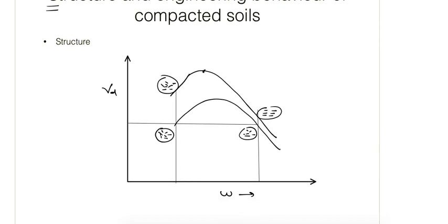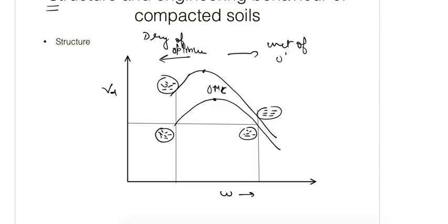At the optimum moisture content, the part on the left is called dry of optimum and the right side is known as wet of optimum. If a compactive effort is given — let's see for this curve — and the soil is compacted on the dry of optimum side, then it will have a more flocculated structure.